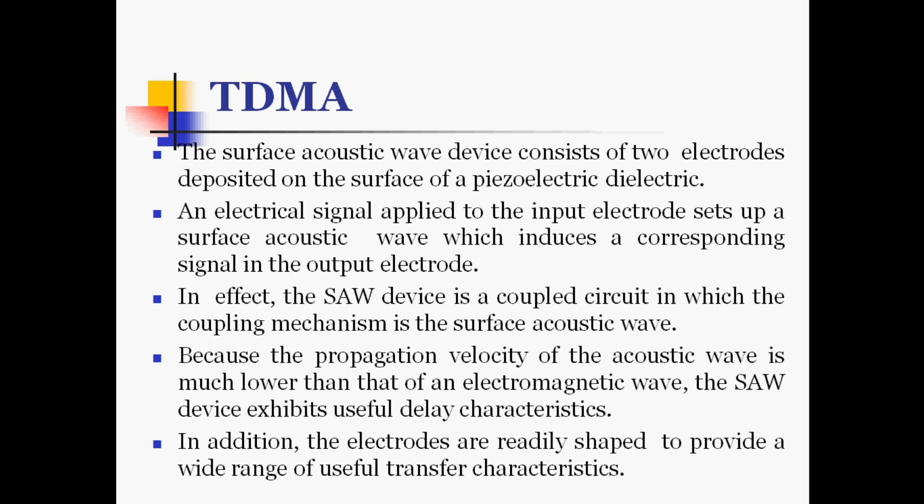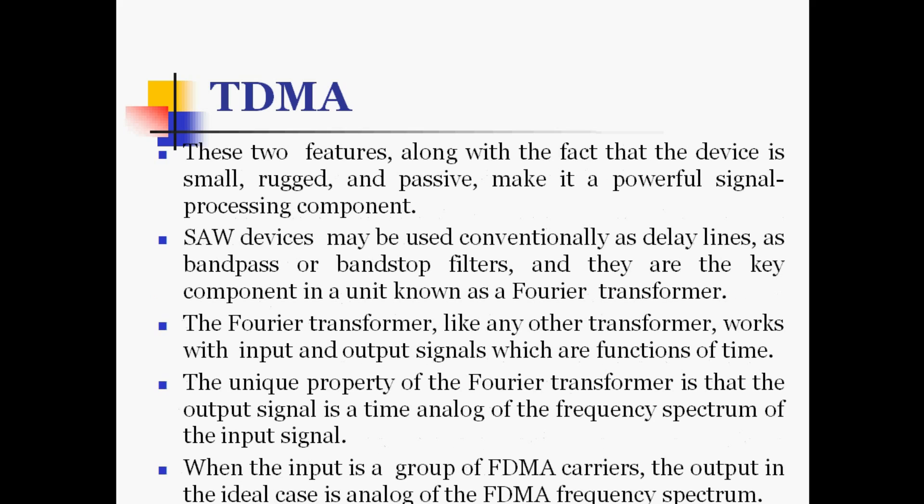The surface acoustic wave device consists of two electrodes deposited on the surface of a piezoelectric dielectric. An electrical signal applied to the input electrode sets up a surface acoustic wave which induces a corresponding signal in the output electrode. In effect, the SAW device is a coupled circuit in which the coupling mechanism is the surface acoustic wave. Because the propagation velocity of the acoustic wave is much lower than that of an electromagnetic wave, the SAW device exhibits useful delay characteristics.